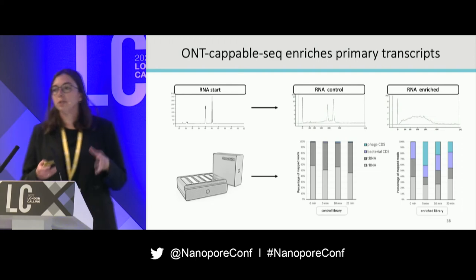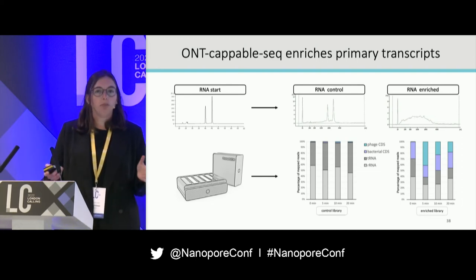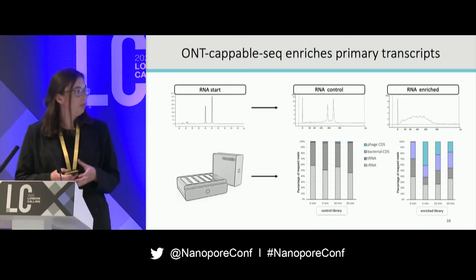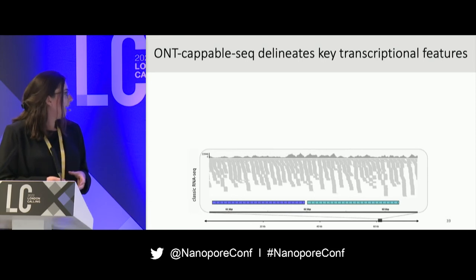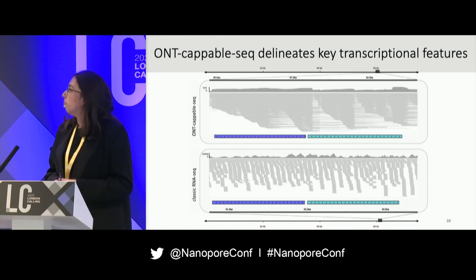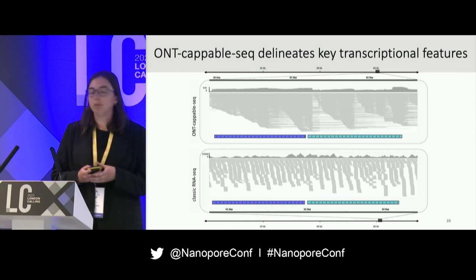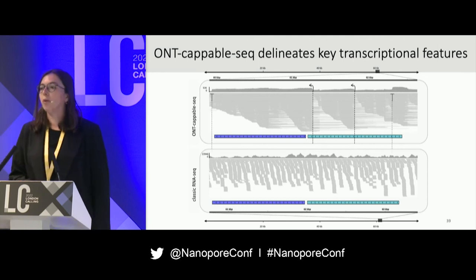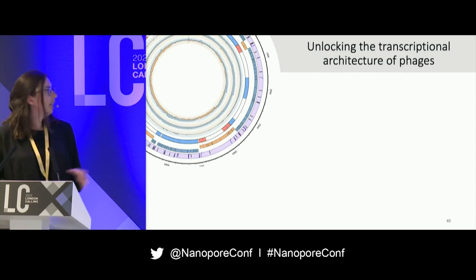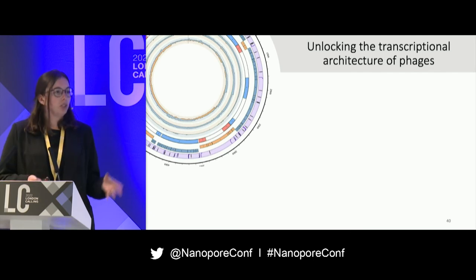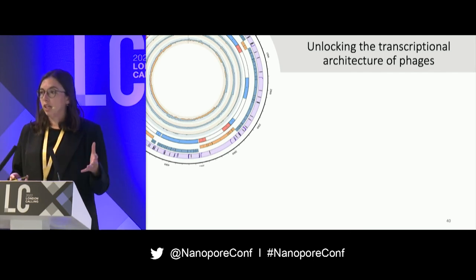Once we generated the data, we were specifically interested in figuring out the transcriptional boundaries and regulatory elements residing in these regions. This is where nanopore sequencing has been truly revolutionary and a real game-changer for us. Here you can see a part of a phage transcriptome sequenced by Illumina compared to our ONT-CAPSEQ approach, where it becomes much more straightforward to see where transcripts start and end. Using this approach, we have generated genome-wide maps of transcription initiation sites, termination sites, expression levels, and operon structures.